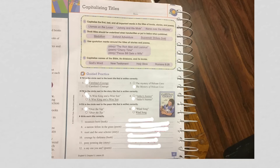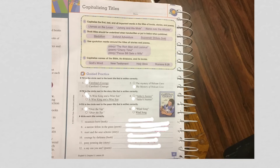And then number four, capitalizing the names of the Bible, its divisions — which would be the Old and New Testament — and then the books of the Bible. So here's your example. Let's jump down to the bottom, the first set of directions: fill in the circle next to the book title that is written correctly. If you come back up here, book titles are underlined.